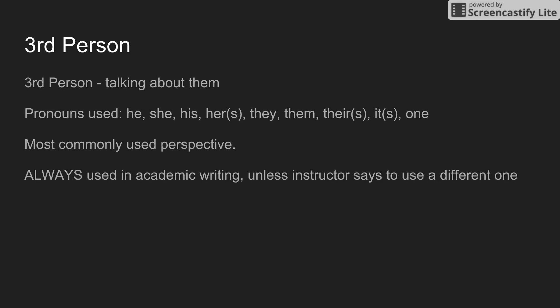Finally, that leads us to third person. Third person is talking about them. Pronouns to be used are he, she, his, her, hers, they, them, their, theirs, it, its, or the word 'one.' Third person is the most commonly used perspective and is always used in academic writing.